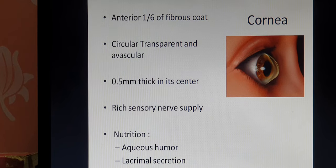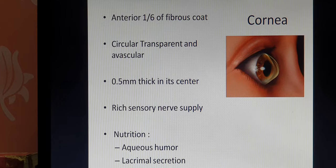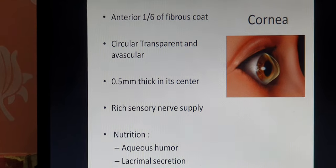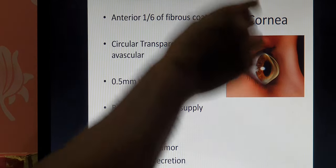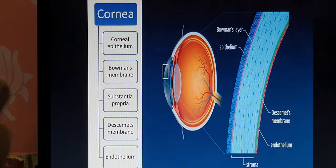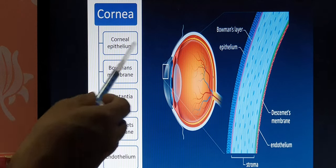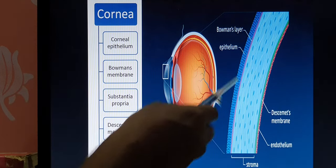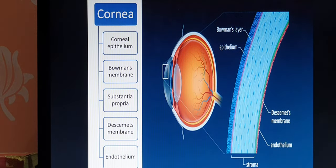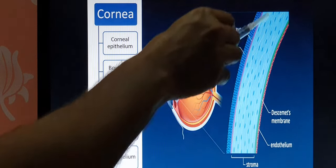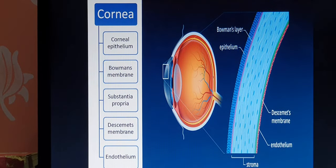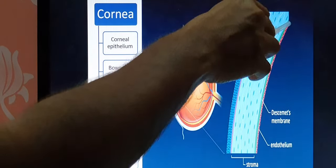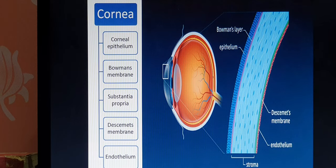After death, we donate eyes — but doctors do not take the complete eyeball. They take only the cornea, and the remaining parts are kept as they are. So only the cornea is replaced for another person. Histologically, the cornea consists of five layers from outside to inside: first, the corneal epithelium made of epithelial cells; second, Bowman's membrane (anterior limiting membrane); third, substantia propria with approximately 250 laminae; fourth, Descemet's membrane (posterior limiting membrane); and fifth, the endothelium.